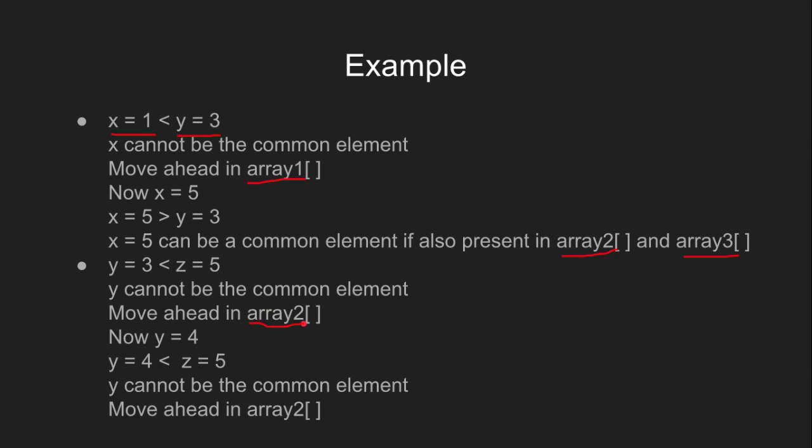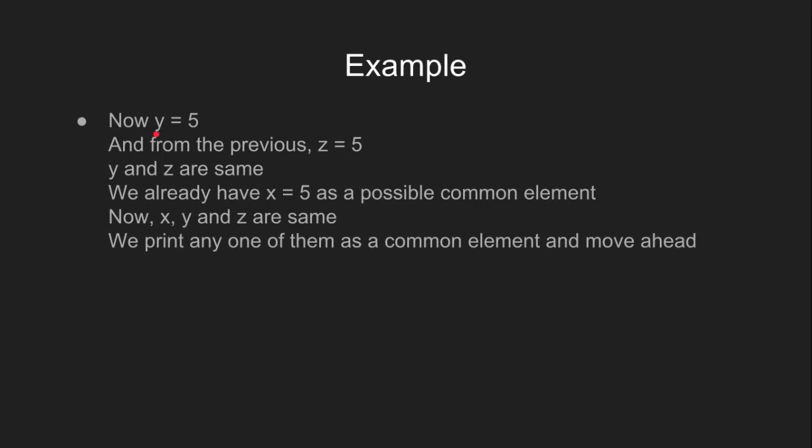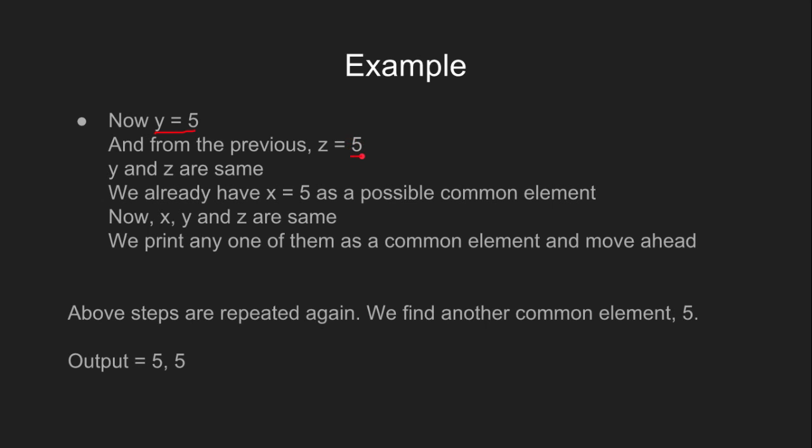Then, we have y equal to 4 which is again less than z. So it cannot be a common element and we again move ahead in array 2. Next, value of y is y equal to 5. We also know that x and z are also 5. So we found our first common element which is 5. The above steps are repeated and we find another common element that is 5. So the output is 5 and 5.